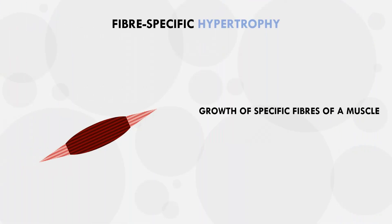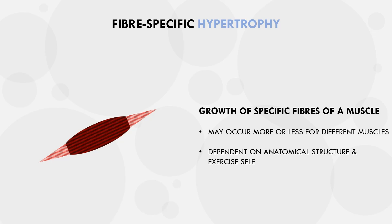So now getting back to the original question: is it possible to target specific portions of the same muscle? The short answer is yes. However, there are two different ways in which this can occur. The first form of variable hypertrophy within the same muscle is fiber-specific muscle growth, which refers to muscle growth of specific fibers of any given muscle. Fiber-specific hypertrophy is certainly a real phenomenon, although the extent to which it occurs is dependent on each muscle and the exercise implemented, as well as the anatomical structure of the muscle.